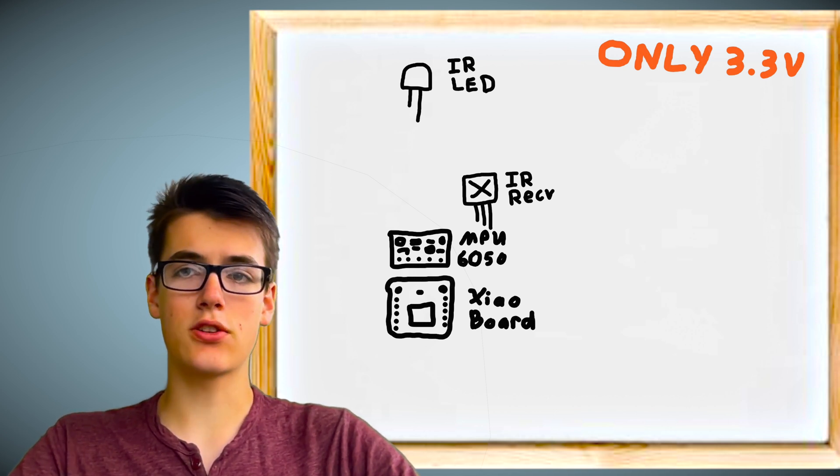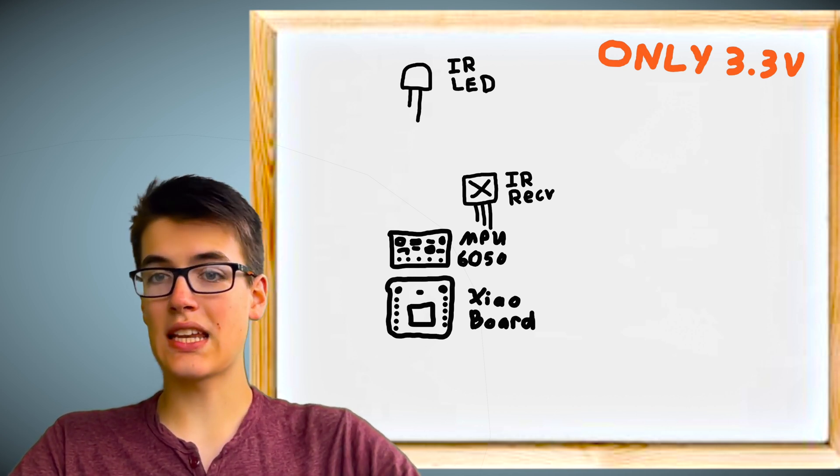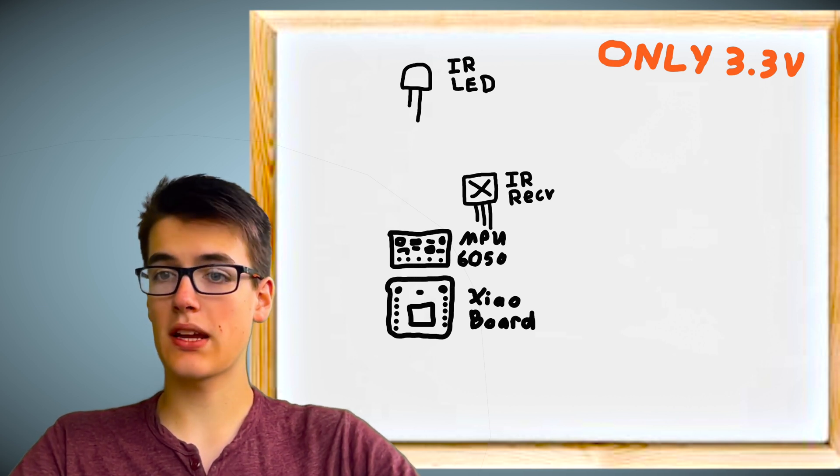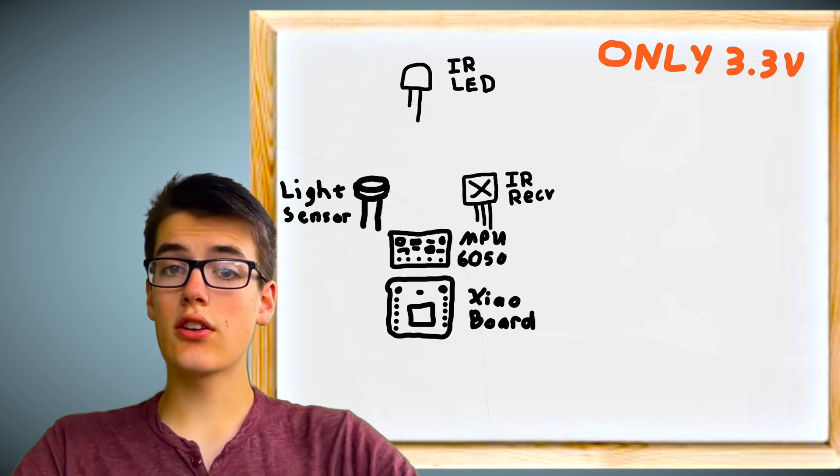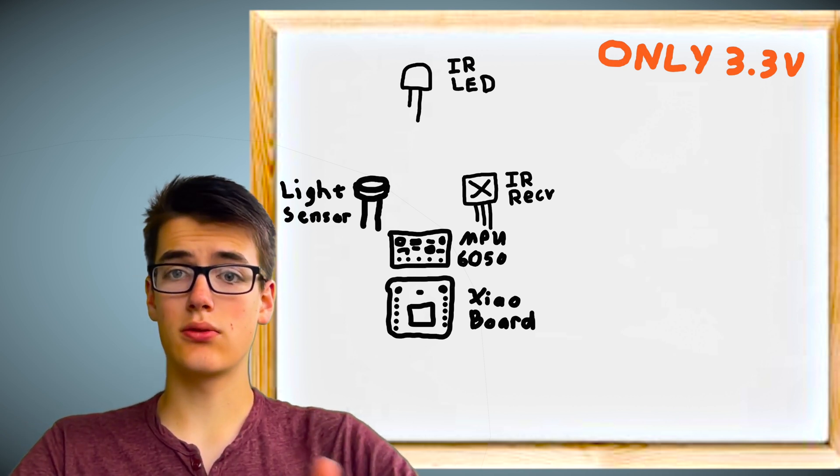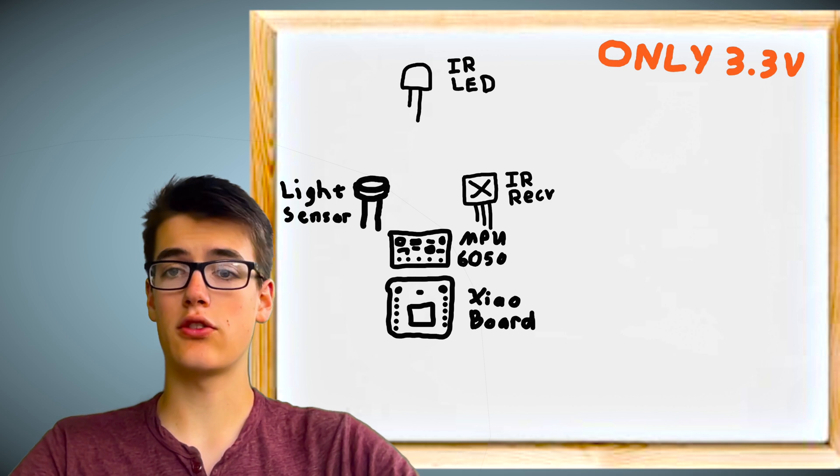Now this is quite nice, but we're obviously missing a key function: turning the device on and off. My first thought is we could add a button, but that's a bit boring. Instead, I'm going to add a light sensor that acts as a button. In our code, we can simply check for how long the light sensor loses light, and that is how long our button was pressed.